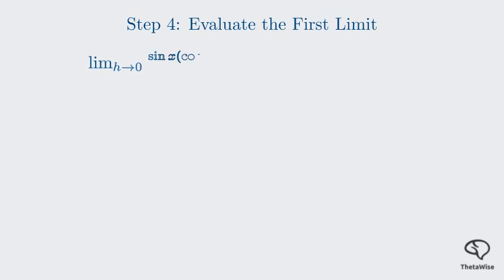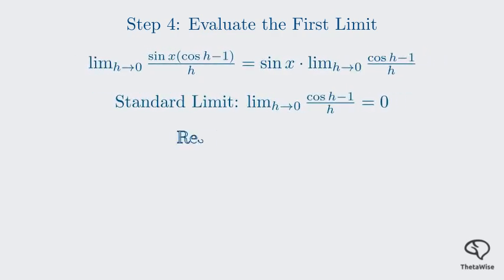Let's work with the first limit. Notice that sine x is a constant with respect to the variable h. This means we can pull it outside the limit. The value of this limit, the limit as h approaches 0 of (cosine h minus 1) over h, is 0. So, our first term simplifies to sine x times 0, which is just 0. I'll show that in green.